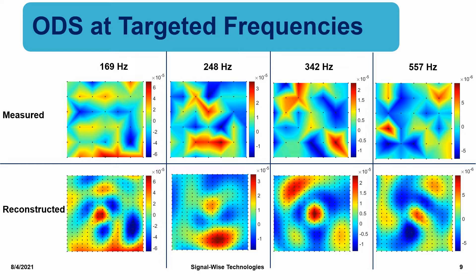And 557 Hz. It is emphasized that the measured ODS at each resonance frequency was rough because the number of measurement points was not enough. On the other hand, the reconstructed ODS was very smooth and the amplitudes of ODS were accurately preserved. This is one of many unique capabilities of the SoundViewer software that enables one to acquire satisfactory reconstructions based on relatively few measurement points.